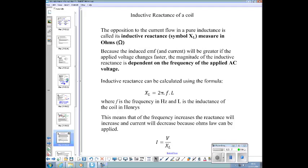Moving on, the inductive reactance of a coil. There's another phenomenon about this coil that causes less current to flow when we connect it to AC than when we connect it to DC. That is its inductive reactance. The opposition to current flow in a pure inductance is called its inductive reactance. It's got a symbol XL. This gets confusing because we'll end up with three different quantities that are all measured in ohms. We've got resistance, now we've got inductive reactance XL, also measured in ohms. Because of the induced EMF and current, it will be greater if the applied voltage changes faster.